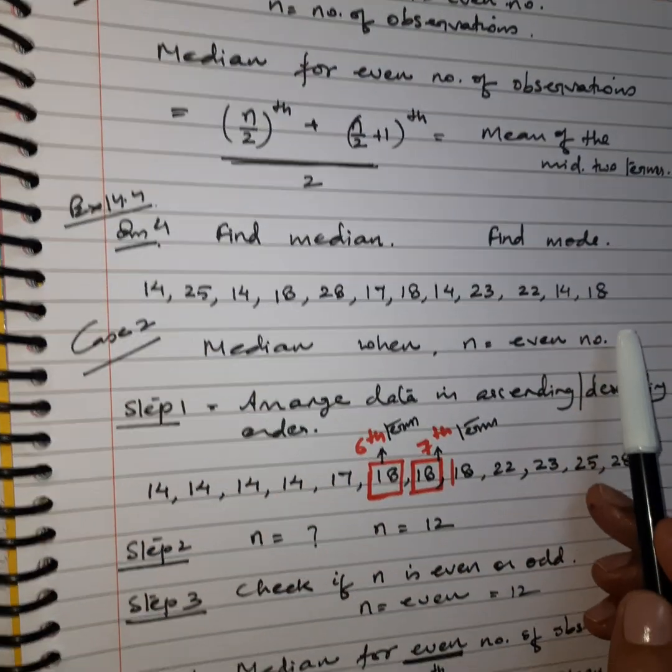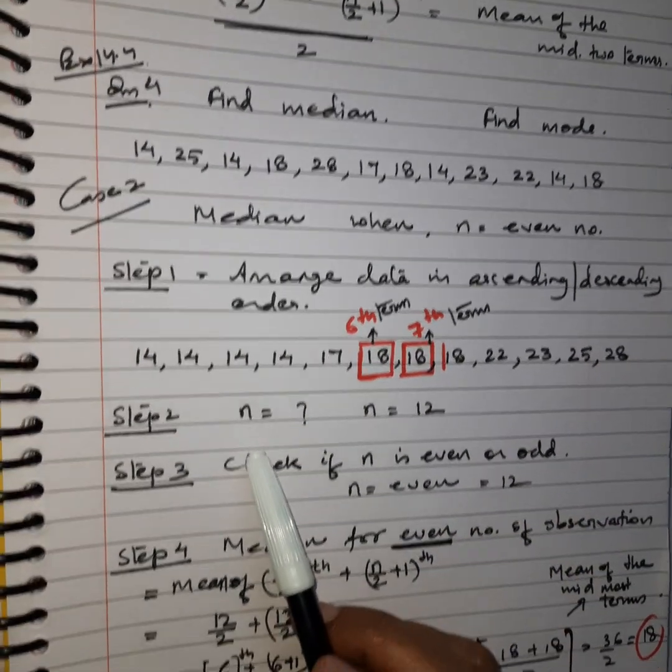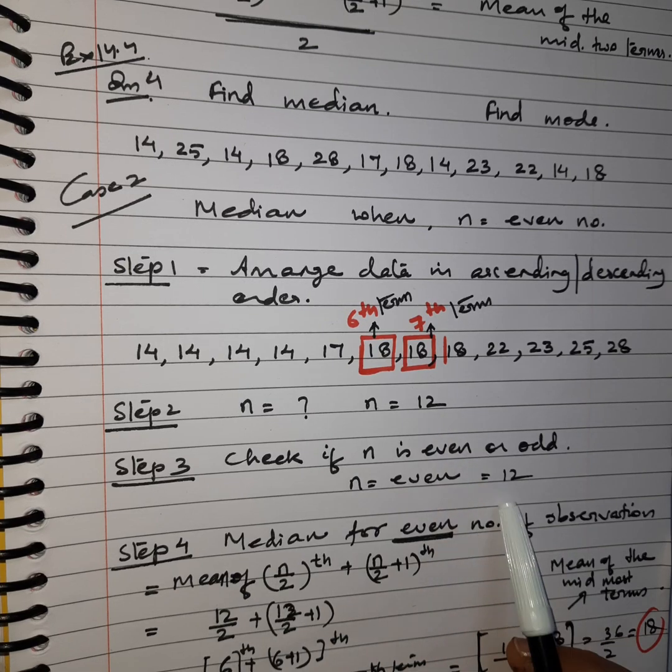You can see here we are given data. We are going to arrange this data here in ascending order. Now we will see how many observations are there. It is 12. 12 is an even number.